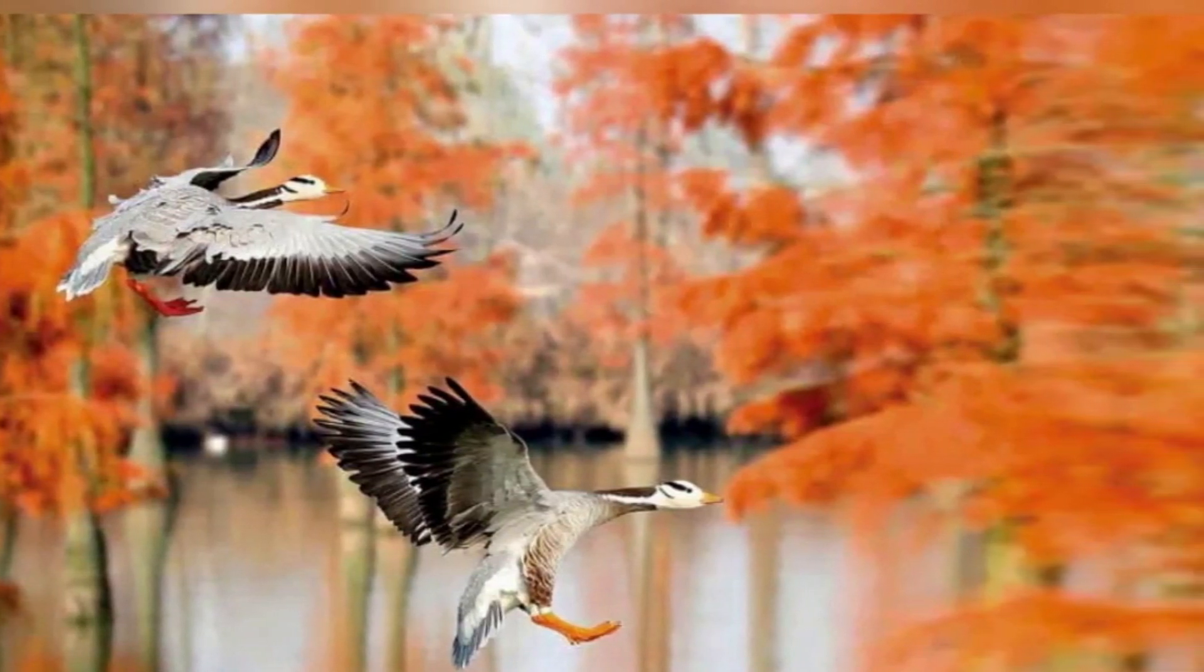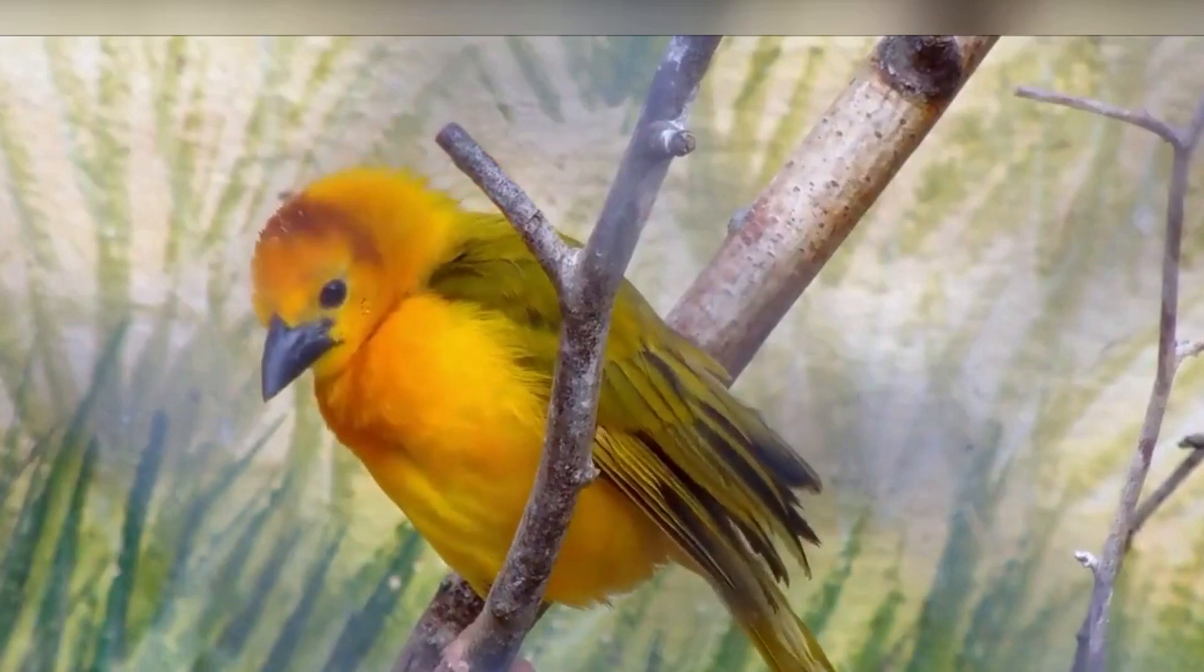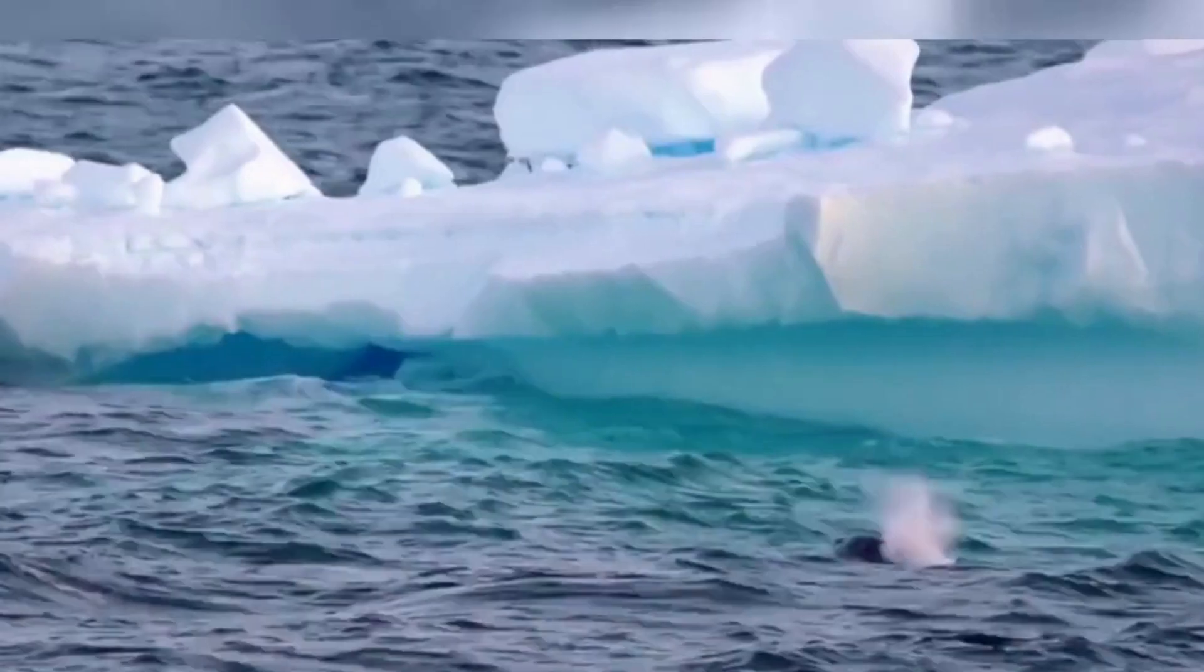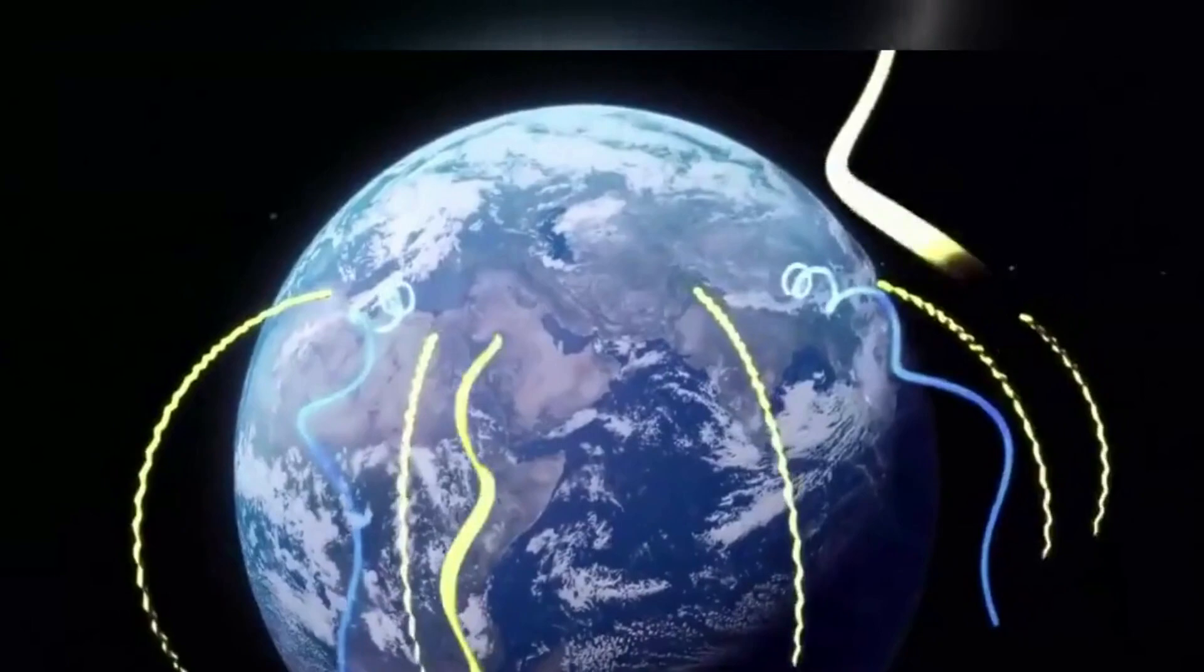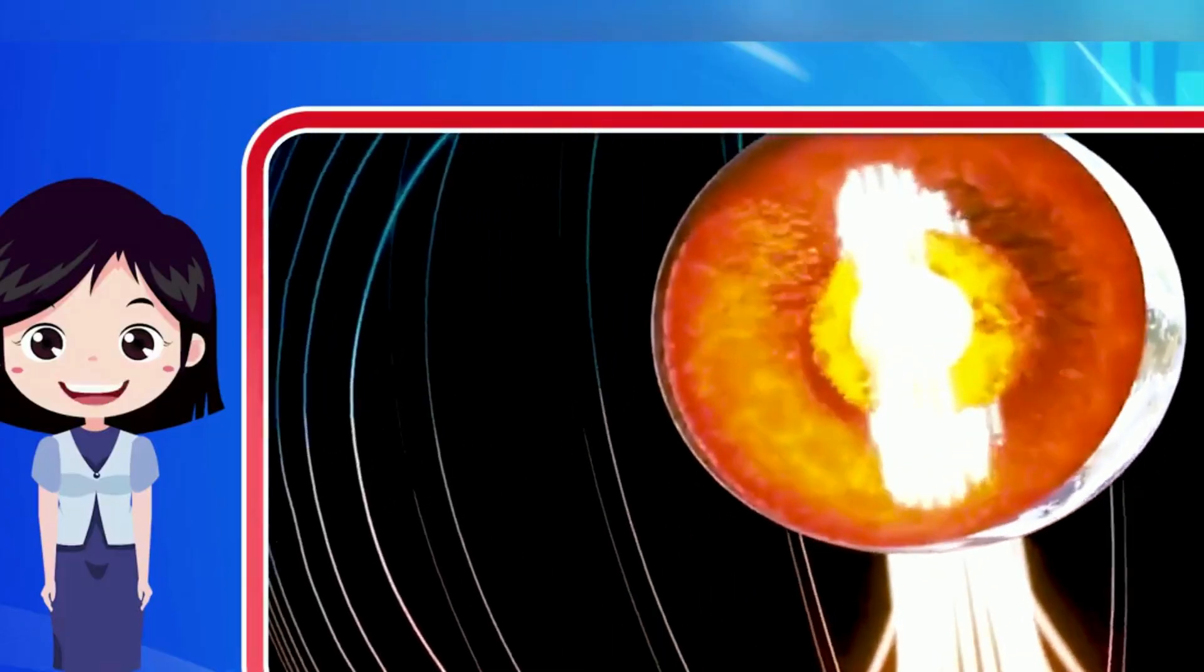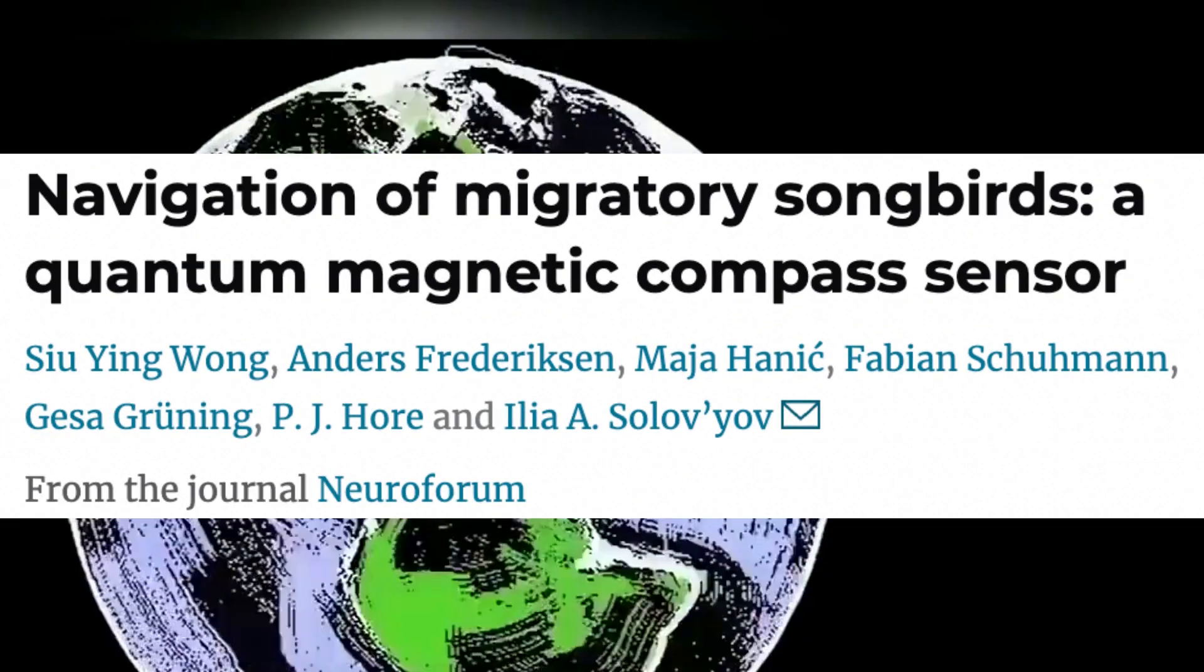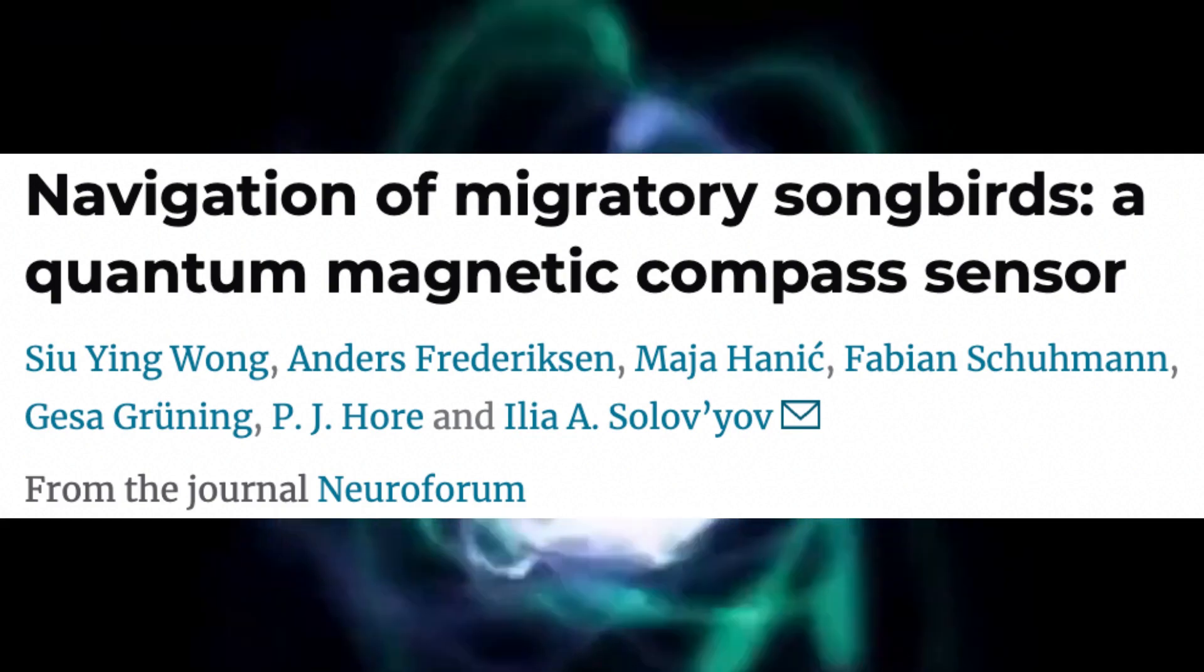Every year, Arctic terns embark on a remarkable migration that spans the globe, from Greenland to the Weddell Sea near Antarctica, covering a distance of 90,000 kilometers, all without the help of Google Maps. Birds possess a remarkable navigation ability. They can find the right direction to travel despite changing weather conditions, day or night. Scientists believe this is possible because birds can sense the Earth's magnetic field, allowing them to precisely align their position on the globe.